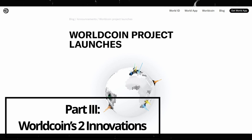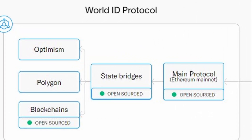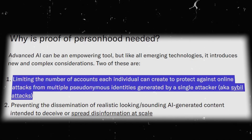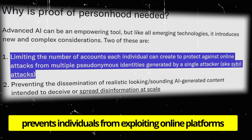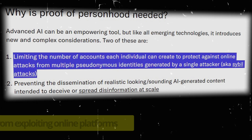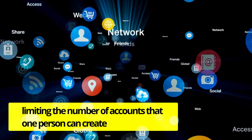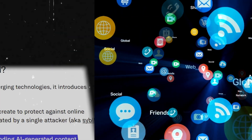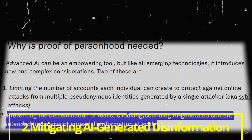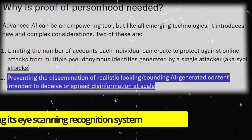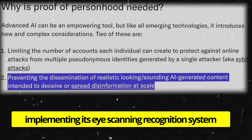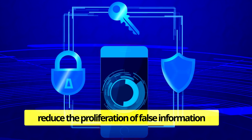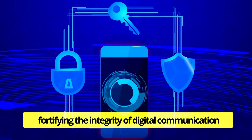Part 3: WorldCoin's Two Innovations. Impressively, WorldCoin is pioneering two innovative strategies to affirm the authenticity of individual users. First, by implementing strict account limitations, WorldCoin's recognition system prevents individuals from exploiting online platforms by using false identities to steal and defraud, also limiting the number of accounts one person can create and ensuring that digital resources are distributed fairly. The second innovation is WorldCoin's mitigation of AI-generated disinformation — an ever-growing challenge for website and platform developers. By implementing its eye-scanning recognition system, WorldCoin claims it will substantially reduce the proliferation of false information generated by AI, fortifying the integrity of digital communications across the internet.